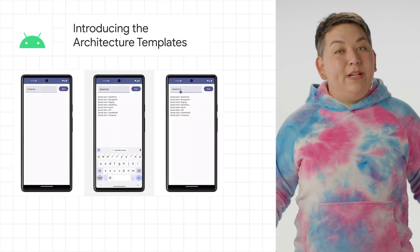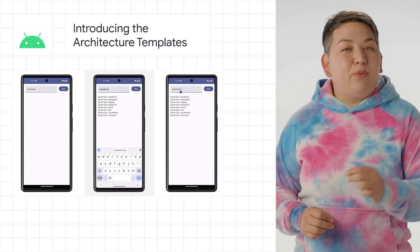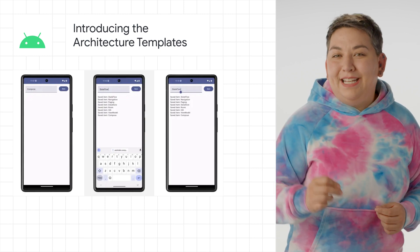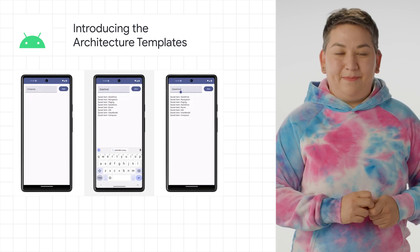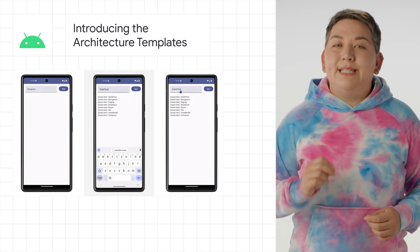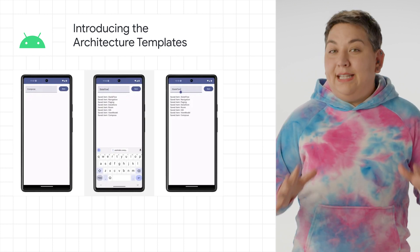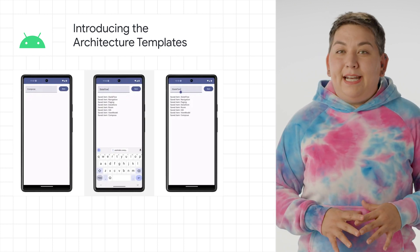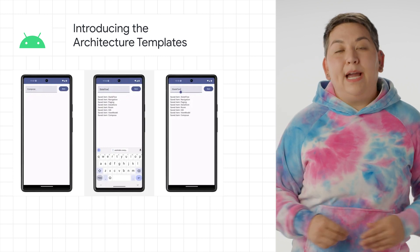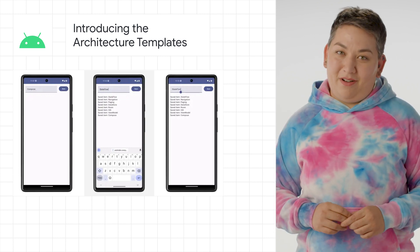We recently shared architectural recommendations and best practices, and now we have templates that implement these recommendations. We launched a new project on GitHub with templates to get you started quickly. These templates contain opinions in the form of architectural patterns and use libraries like Room, Hilt, Material 3, and more.